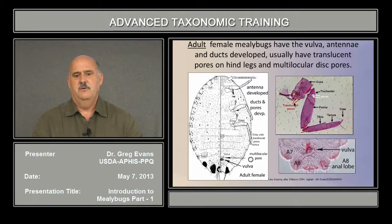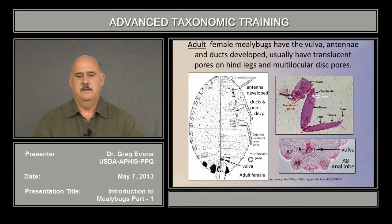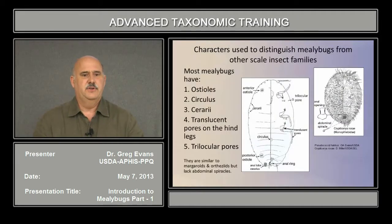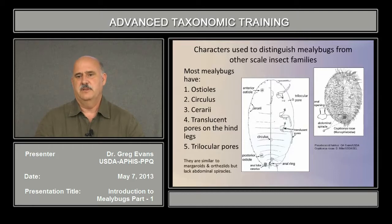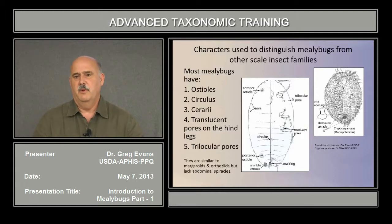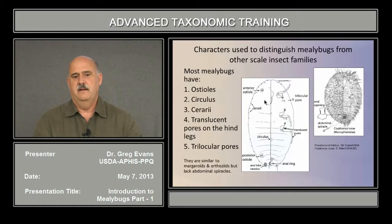Translucent pores are found only on the hind legs of adult female mealybugs. The vulva is located in this area at the posterior end. Most mealybugs also have ostia — a pair on the anterior head area just above the mouthparts, and another pair on the dorsum along the sixth abdominal segment.